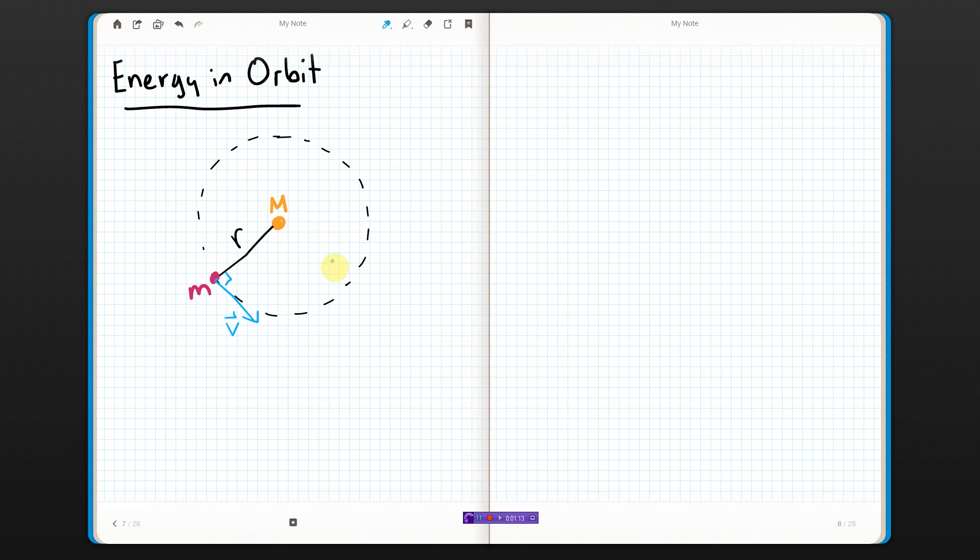Alrighty. So let's just find the total energy of this thing. Total energy. Well, we've got two kinds of energy that could be happening here. We've got kinetic and we've got gravitational potential energy. So, let's do those in pieces.